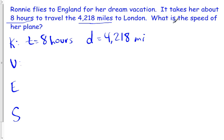Our unknown is what is the speed of her plane? So we want to know speed. Our equation that we're going to use, this one's simple. Speed equals distance over time. Then we're going to substitute and solve.